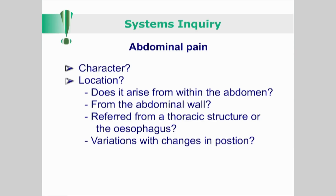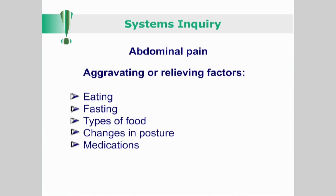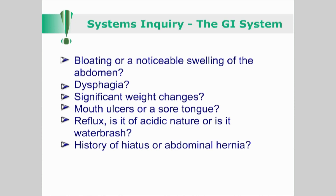Having reviewed the structures and principles influencing abdominal pain, let us now consider some important case history questions. Is the patient suffering from abdominal pain? If so, what is the character and location? Does it arise from within the abdomen, from the abdominal wall, referred from a thoracic structure or the oesophagus? Does the pain vary with changes in position? Does anything aggravate or relieve the symptoms, for example eating or fasting? Does it vary with different types of food? Does the pain change with changes in posture? Is the pain affected by medications? Do they suffer from bloating or a noticeable swelling of the abdomen?